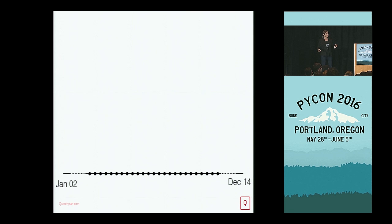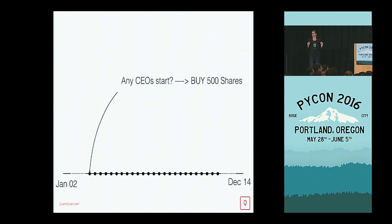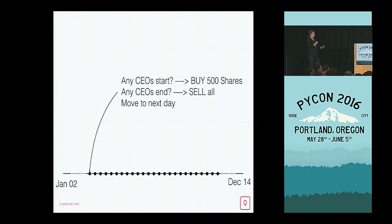My first basic strategy did the following: every single day, starting from January 2, 2002, it asks a couple questions. First, are there any CEOs that started today? If yes, it buys 500 shares of that company. Then it asks, did any CEOs end today? If yes, it sells everything I had for that company. It then moves on to the next day. My strategy marches on through history, making buy and sell decisions using historical data as if it were actually trading in the market during that time period.